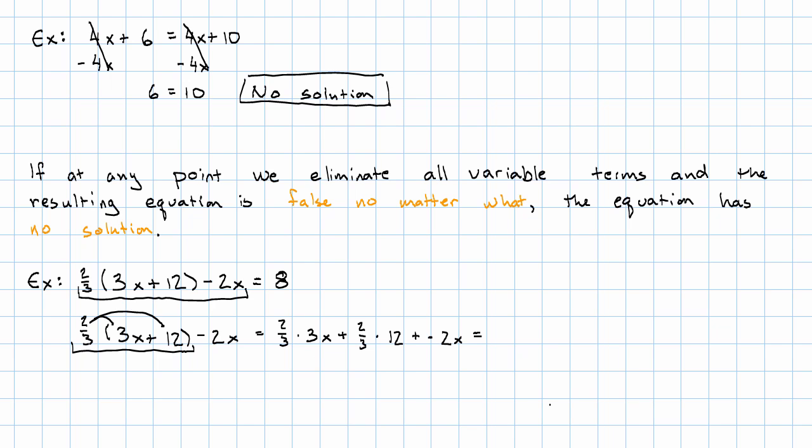2 thirds times 3x, that's 2x. 2 thirds times 12, that's 8. And don't forget the negative 2x. You're welcome to use your calculator for that multiplication if you'd like.